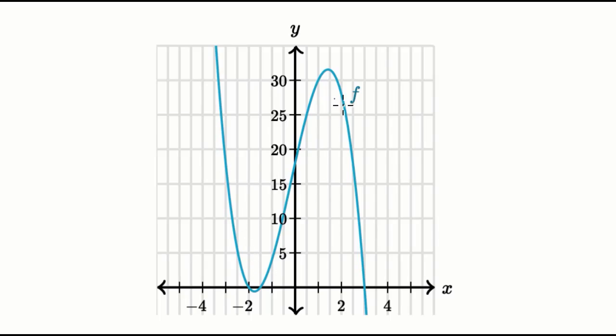So I have the graph of a function f here. And the first thing I want to do is figure out all of the x values where the function intersects the x-axis. Or another way to think about it is, what are the x values where f of x is equal to zero?